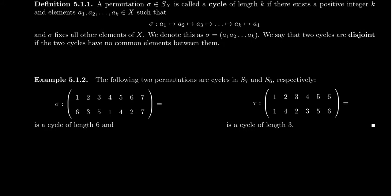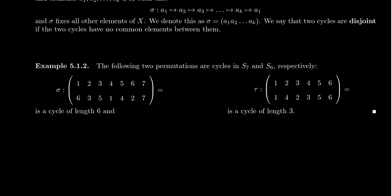So let's look at some permutations from S_7 and S_6. The first one, sigma, this is going to come from S_7. So we see that 1 goes to 6, 2 goes to 3, 3 goes to 5, 4 goes to 1, 5 goes to 4, 6 goes to 2, and 7 goes to 7. So what we're going to do is notice that this is a 6-cycle. We often refer to a cycle as a K-cycle, where K is the length. So this is going to be an example of a 6-cycle.